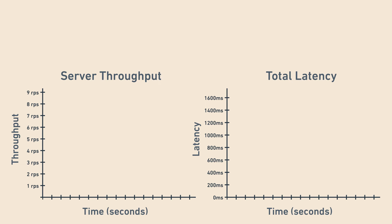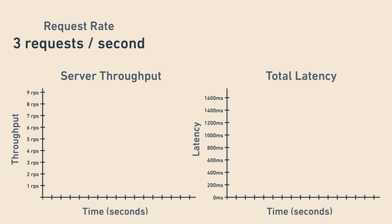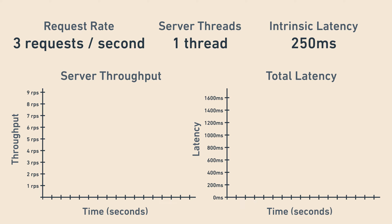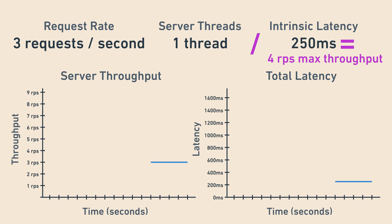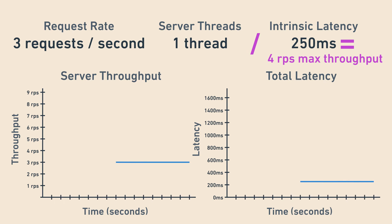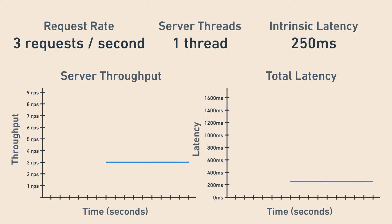Let's look at the relationship between all of these concepts with this server simulation. This server is receiving three requests per second, has one thread to handle requests, and each request takes 250 milliseconds. The max throughput is one thread divided by 250 milliseconds, which equals four requests per second. Since we are currently under the max throughput, we shouldn't expect any queuing latency. As expected, the total latency stays flat at 250 milliseconds.